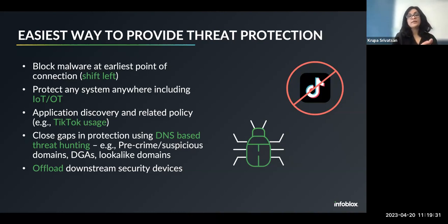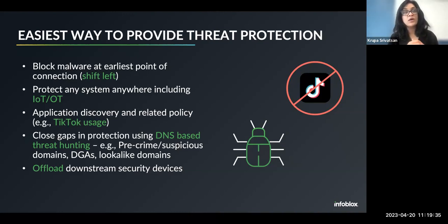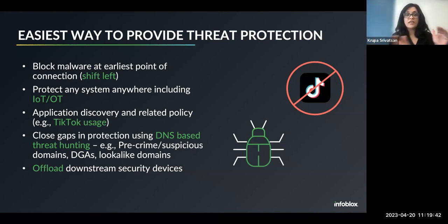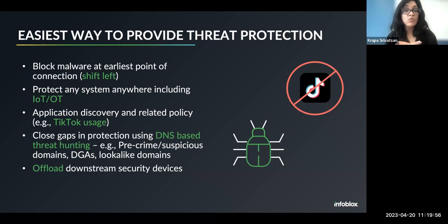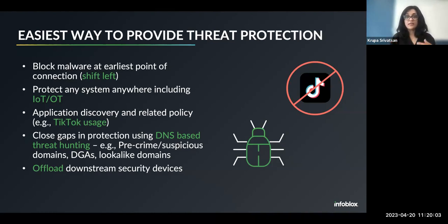If you block that initial request, you are doing what's called prevention — you are not even allowing that device to go to that suspicious destination. We call it shifting left of protection. That is the value of DNS. Even before your firewalls or gateways can see it, your DNS can block it. It's protocol agnostic; we don't care what device it's coming from. It can protect any system anywhere, including IoT and OT. So that's an added benefit.